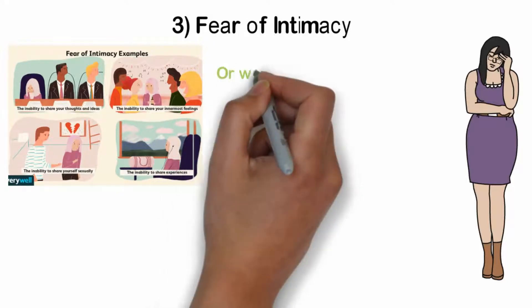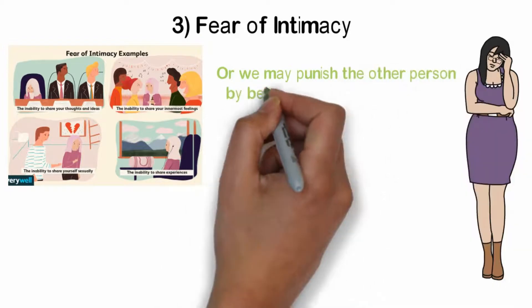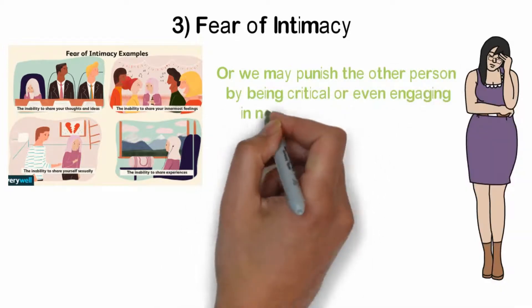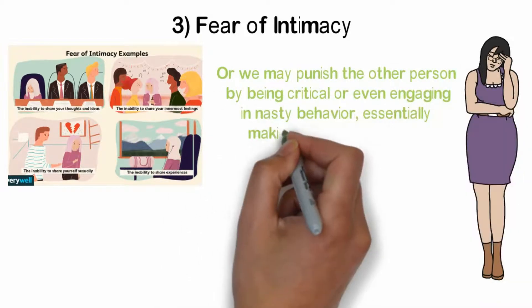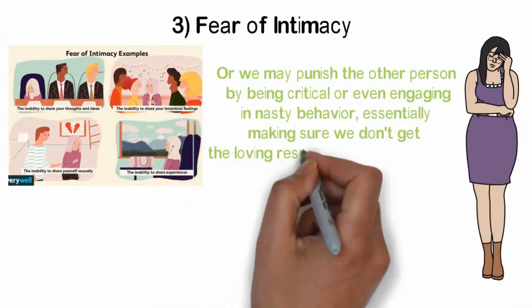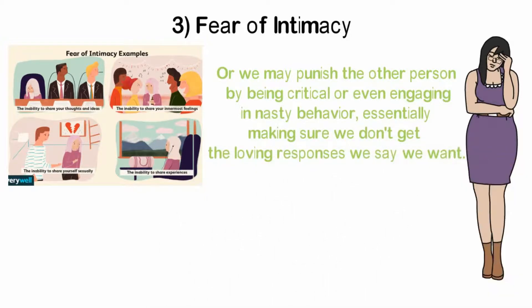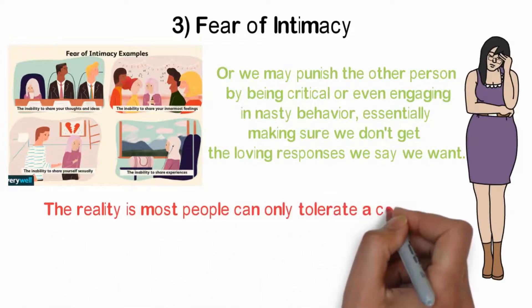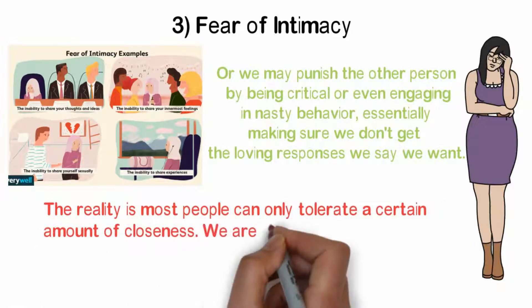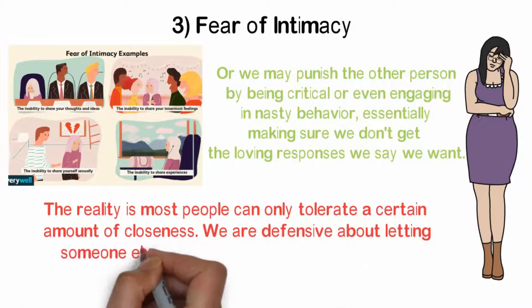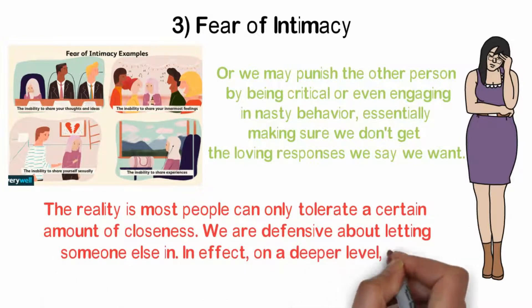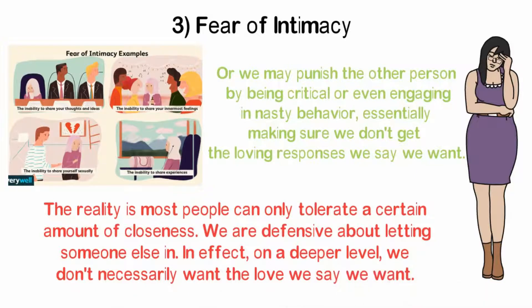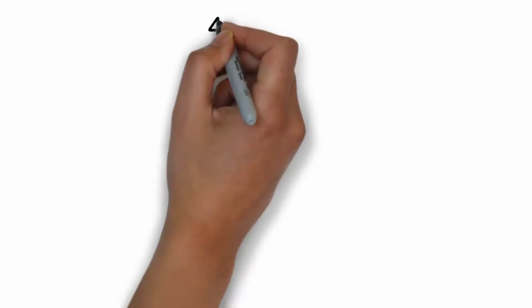Or, we may punish the other person by being critical or even engaging in nasty behavior, essentially making sure we don't get the loving response we say we want. The reality is, most people can only tolerate a certain amount of closeness. We are defensive about letting someone else in. In effect, on a deeper level, we don't necessarily want the love we say we want.